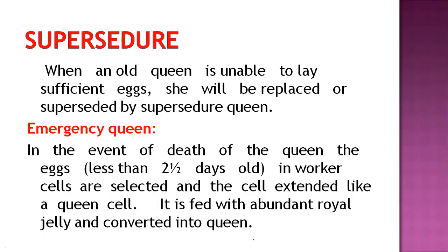What is supersedure? Supersedure occurs when an old queen is unable to lay sufficient eggs or her egg-laying capacity is very low. She is then replaced by a supersedure queen — meaning a new queen is developed. This also happens when she runs out of spermatozoa in her spermatheca and lays many unfertilized eggs from which only drones emerge. This process is called supersedure.